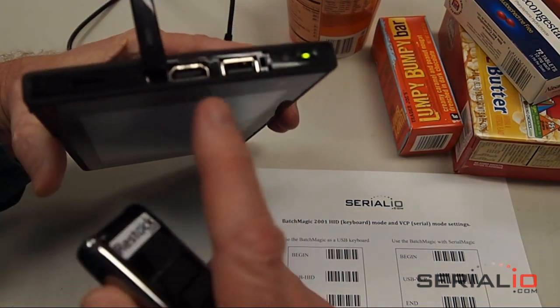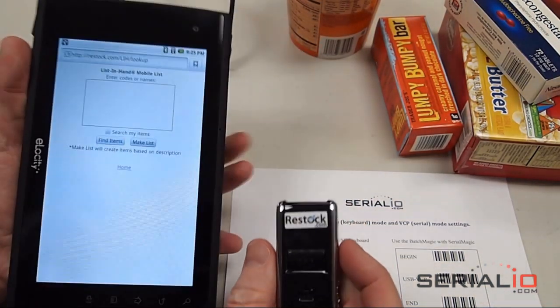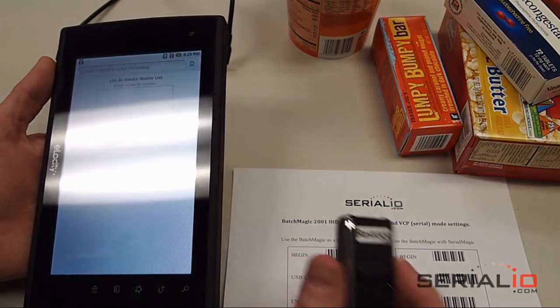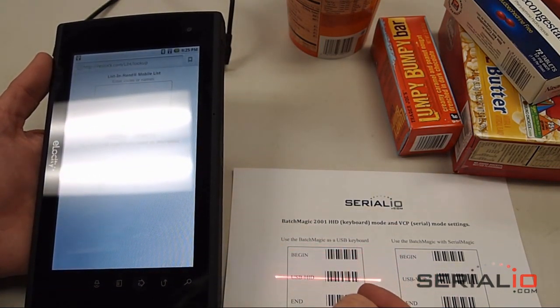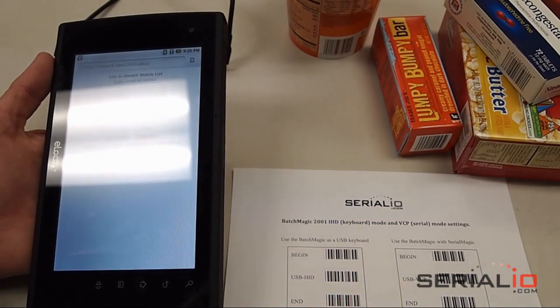The Elocity supports USB devices, so we take the USB scanner and we put it into USB keyboard mode by scanning the barcodes. This control sheet is available on SerialIO.com.